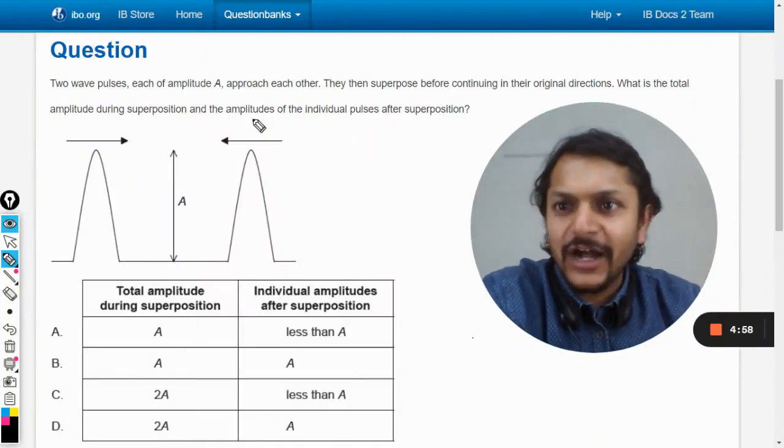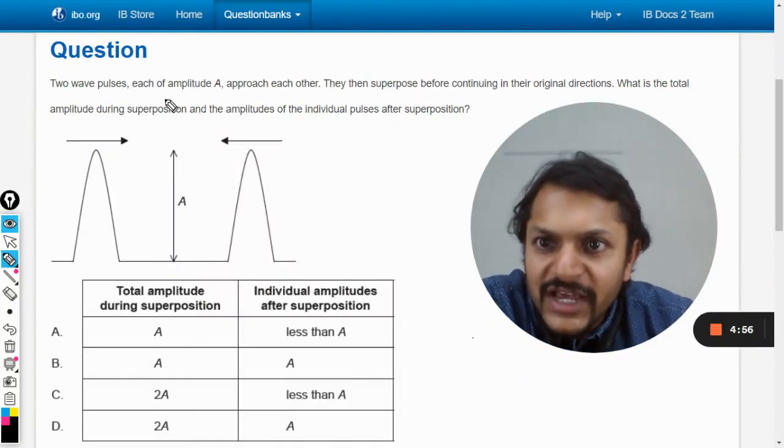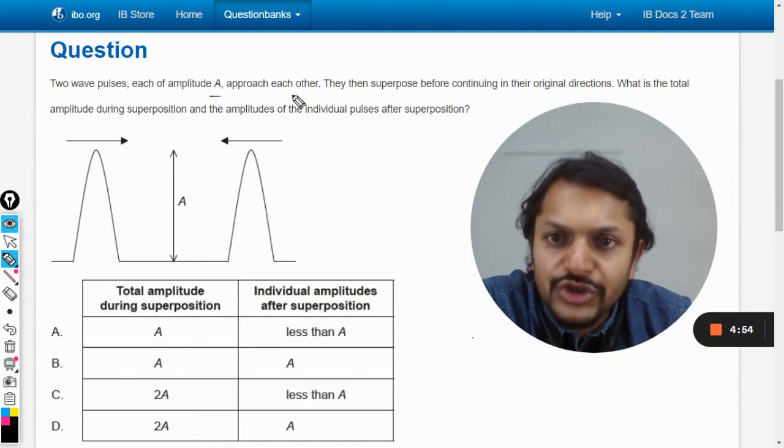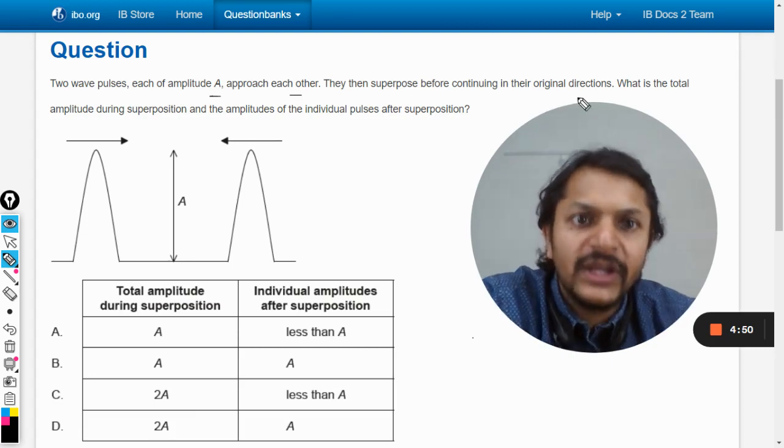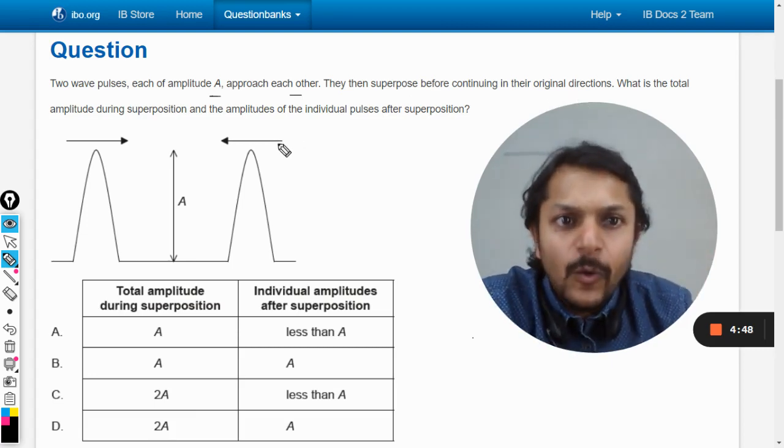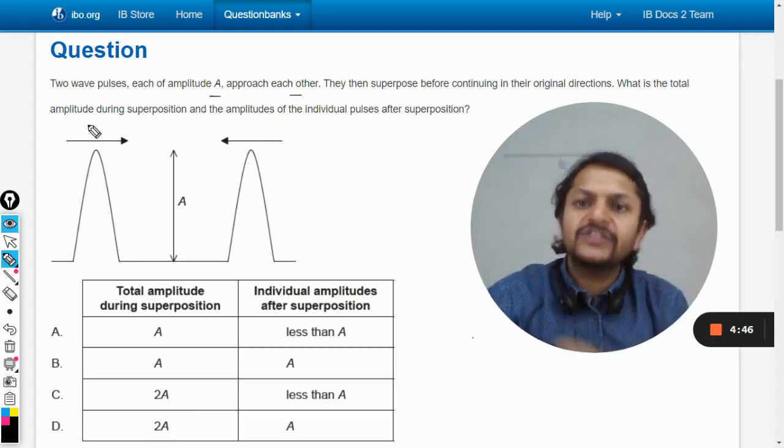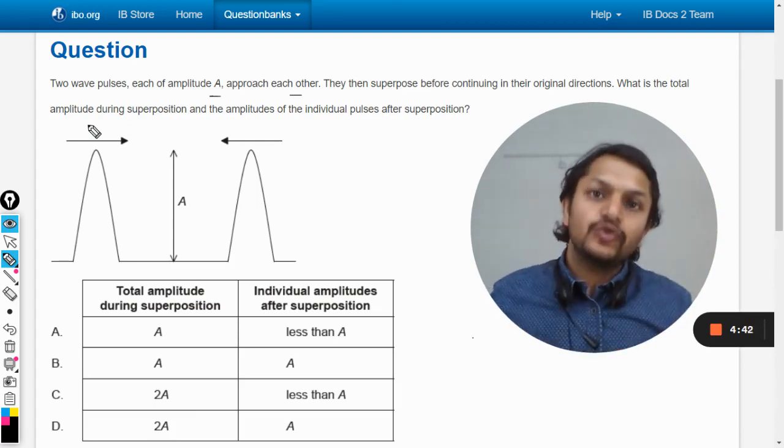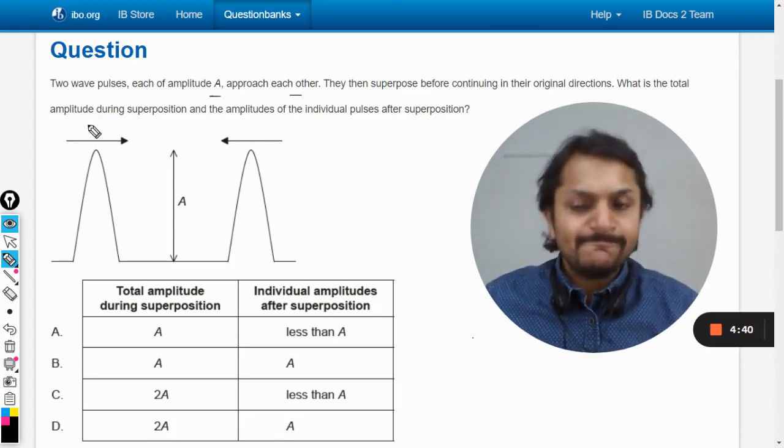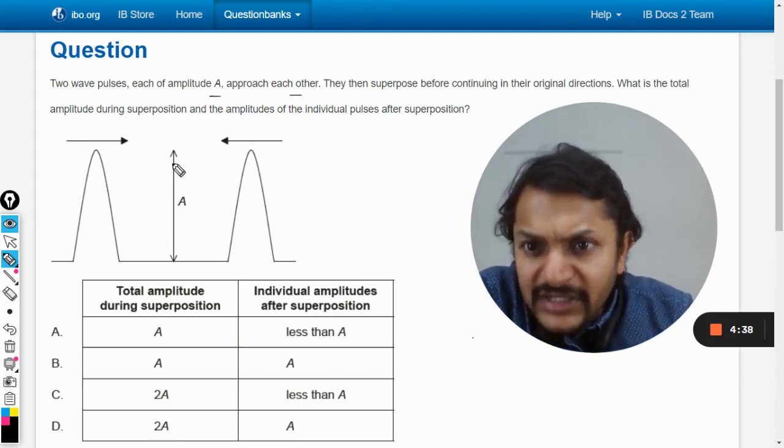Okay dear students, let us start doing this question. Two wave pulses, each of amplitude A, approach each other. They then superpose before continuing in their original directions. What is the total amplitude during the superposition and the amplitudes of the individual pulses after the superposition?